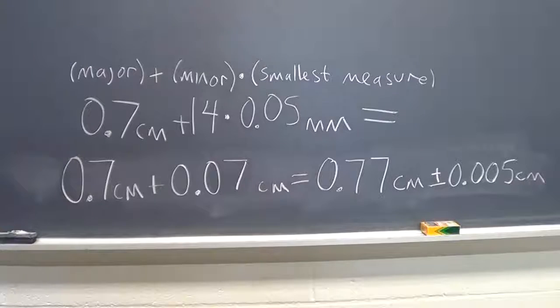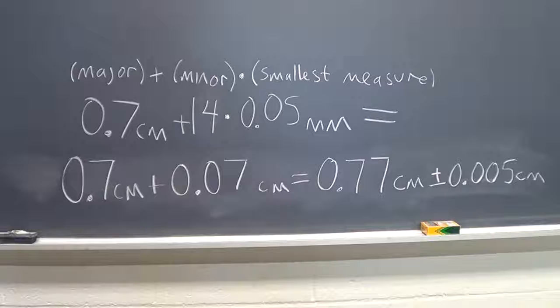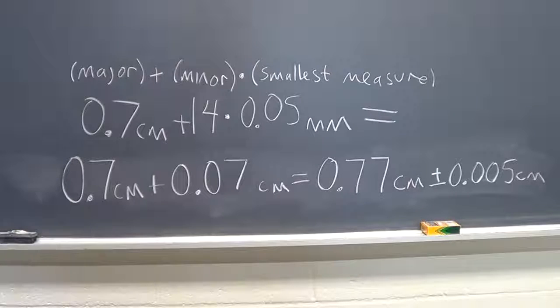The way we'll combine these sets of measurements—the 0.05 millimeters on the minor scale as the smallest measurement with the major scale of 0.7 centimeters—is we'll take the major plus the number of minor increments, in this case 14, and then multiply that number times the smallest measure.